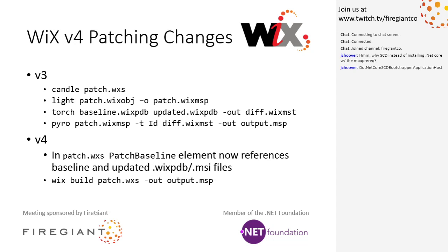Looking at making that less complicated now that we have a fresh look at the whole thing — in the patch baseline element, which is the place where you put this ID today, you now reference the two MSIs or Wix PDBs that you want to transform. So you have your baseline and your updated MSI inside your patch information. Then you just do a build like you would build anything else: you build your patch WXS and say you want the output as the MSP. Behind the scenes it does essentially all the work those other tools did, without writing intermediate files to disk.